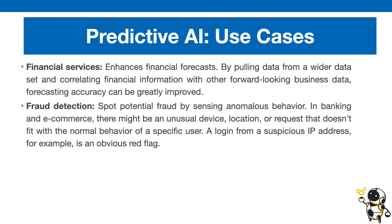Predictive AI is also used for fraud detection. Credit card companies use this all the time. Whenever they start to see fraudulent or abnormal behavior in your spending pattern, it automatically sends you a text and notifies you of suspicious activities so that you can detect whether or not someone has misused your credit card.